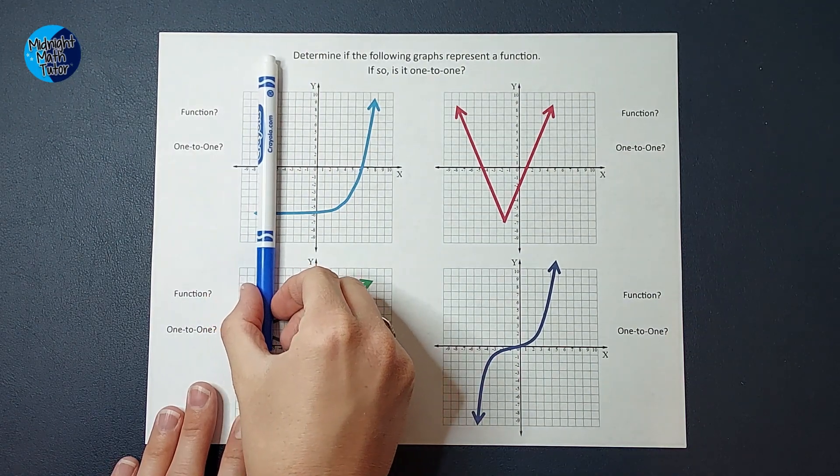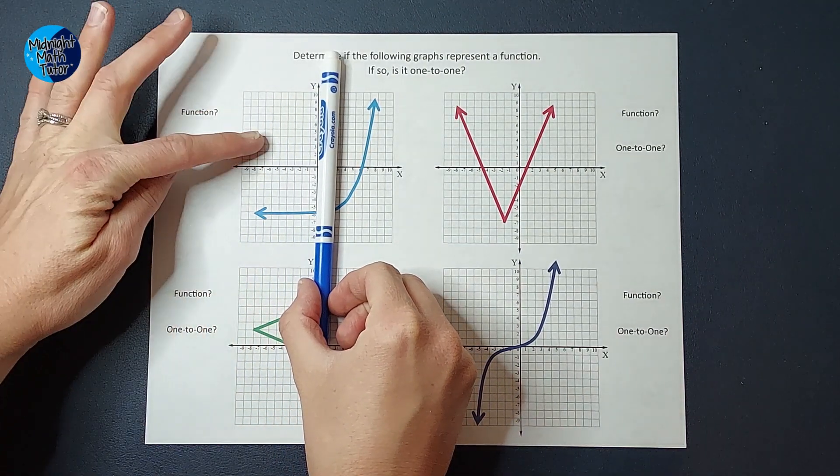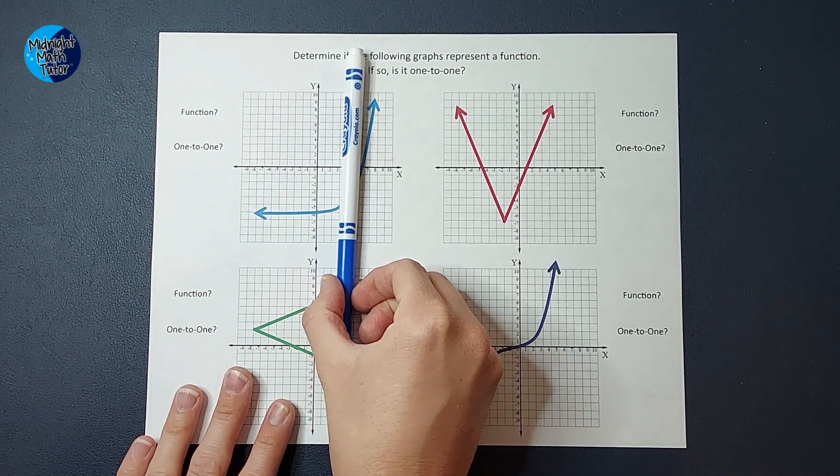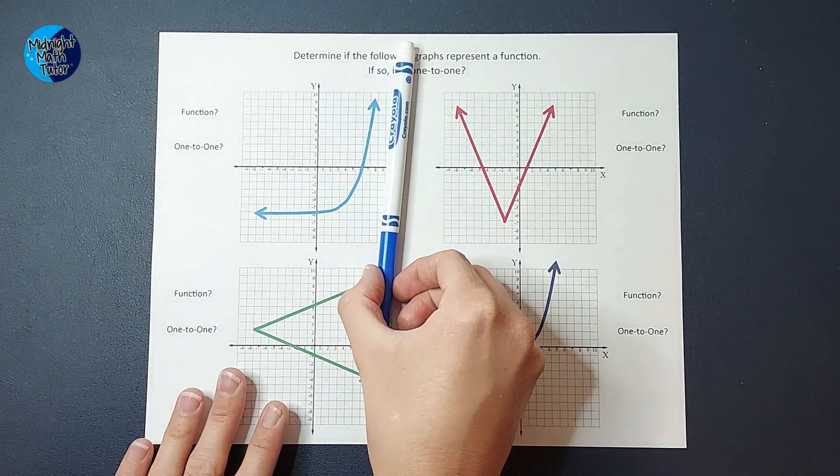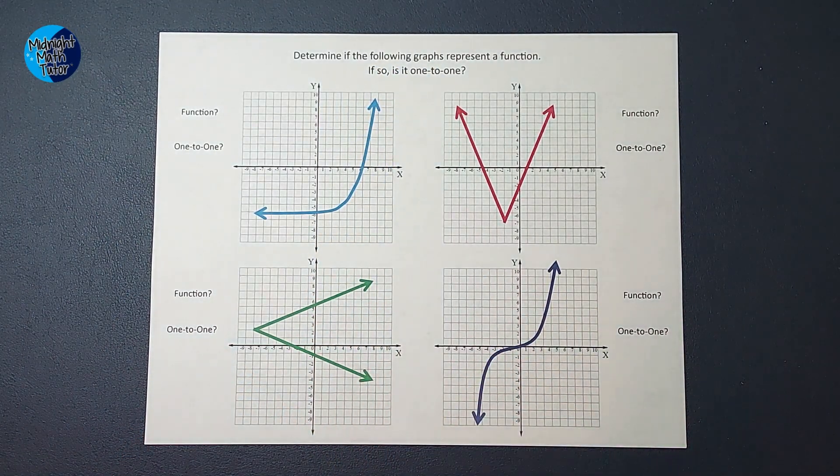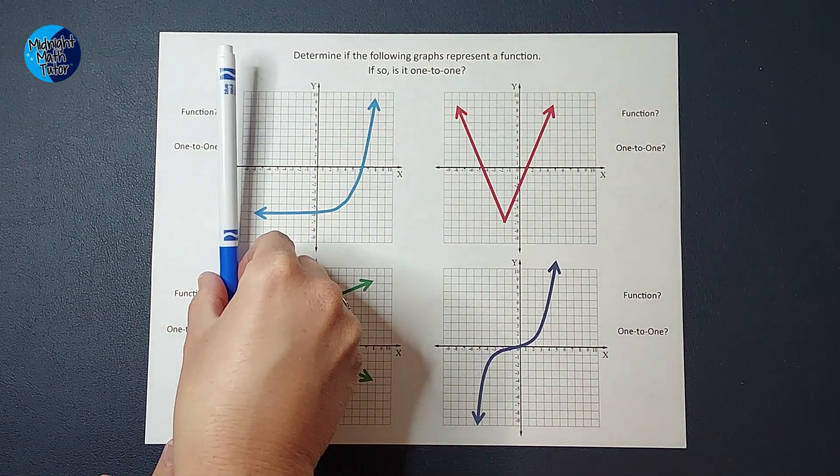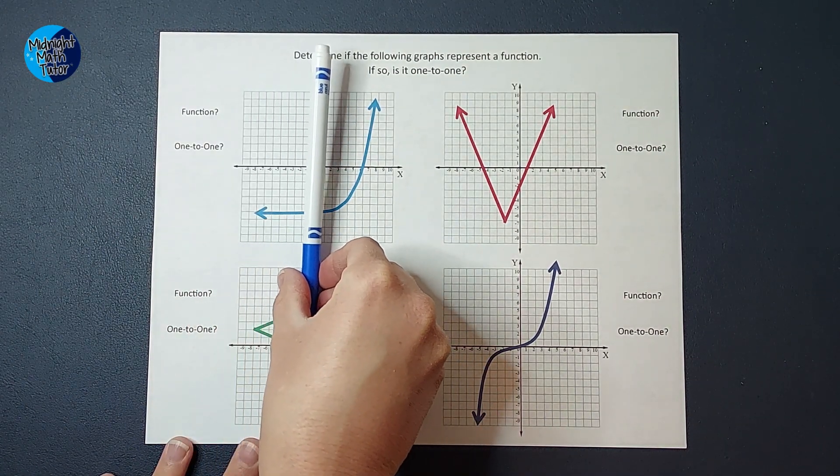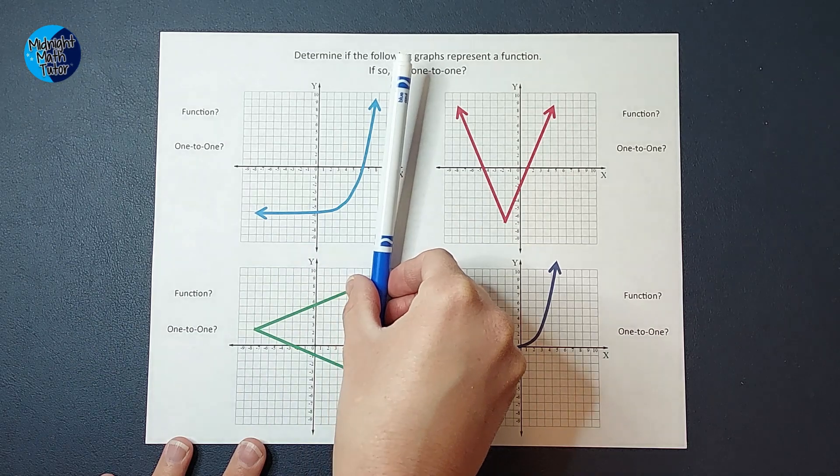And you kind of just go across your graph, I'm looking at this one here, across your graph and make sure that the marker or pencil or whatever never touches two points at the same time when it is vertical. So as you can see, this one is a function.